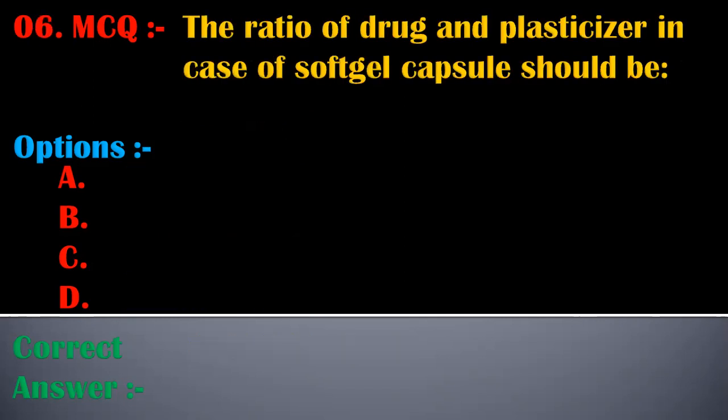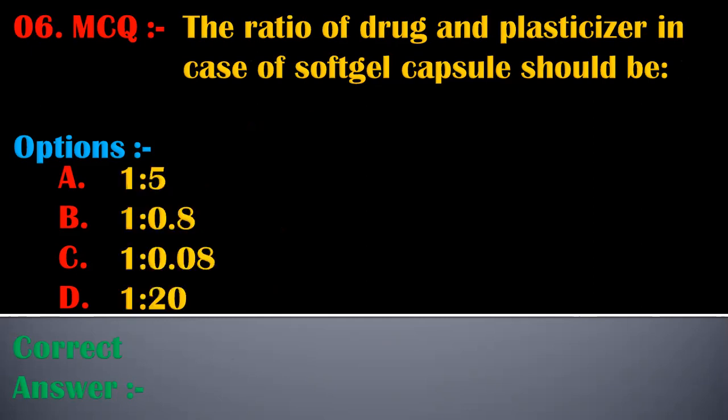The sixth MCQ is: the ratio of drug and plasticizer in the case of a soft gel capsule should be — option: 1 is to 5.